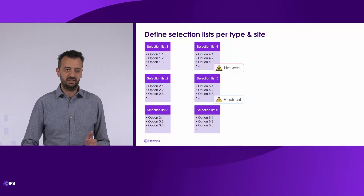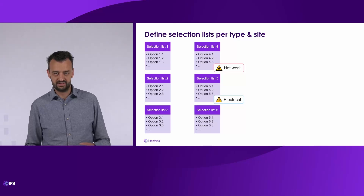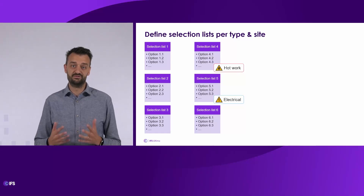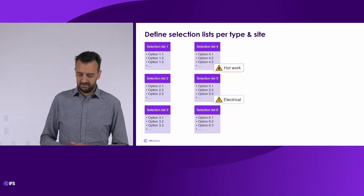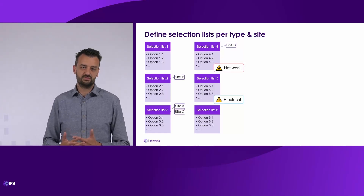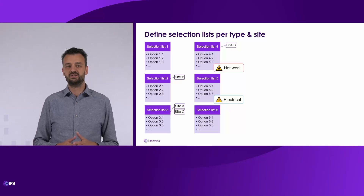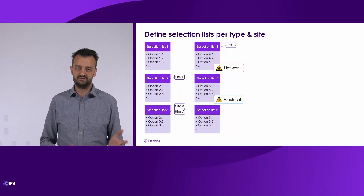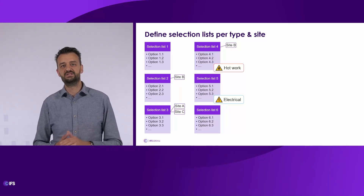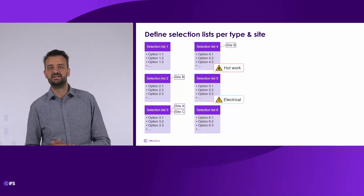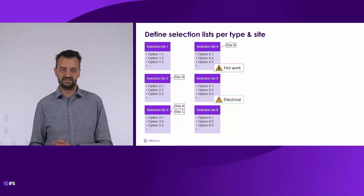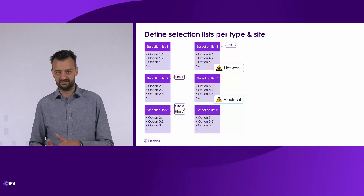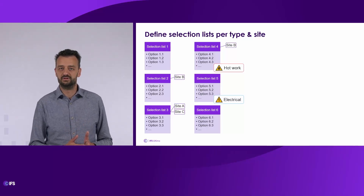For example, selection list number four is specifically for hot work — something about flammable materials — and selection list five is specific for electrical permits. We also want to be able to indicate that a certain selection list is only applicable for a certain site. So selection list two is only applicable for site B, selection list three is only applicable for site A and C, and selection list four is also for site B. In this case, selection list four will only be applied for a hot work permit in site B — in other sites it won't be applied.